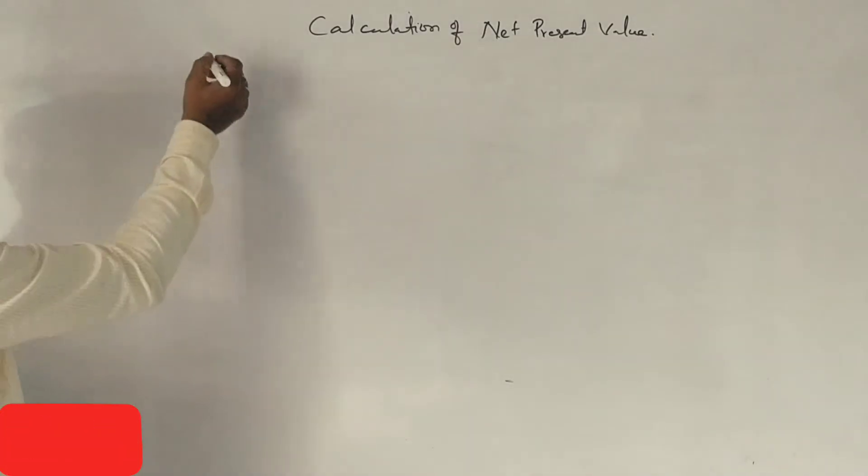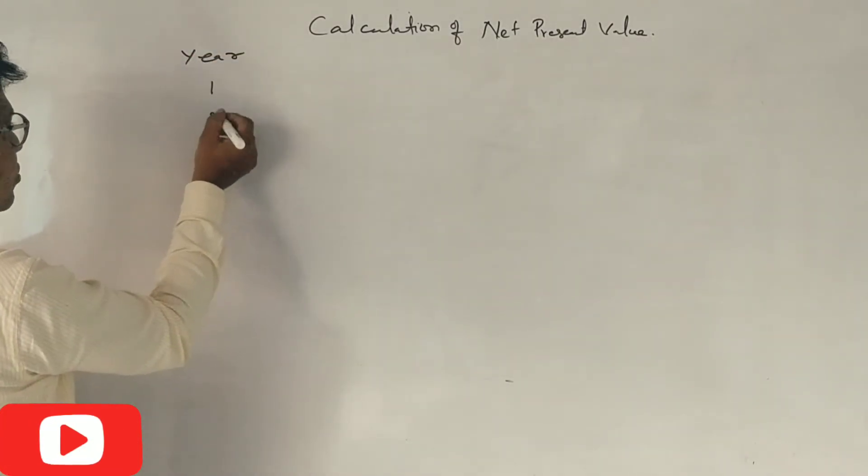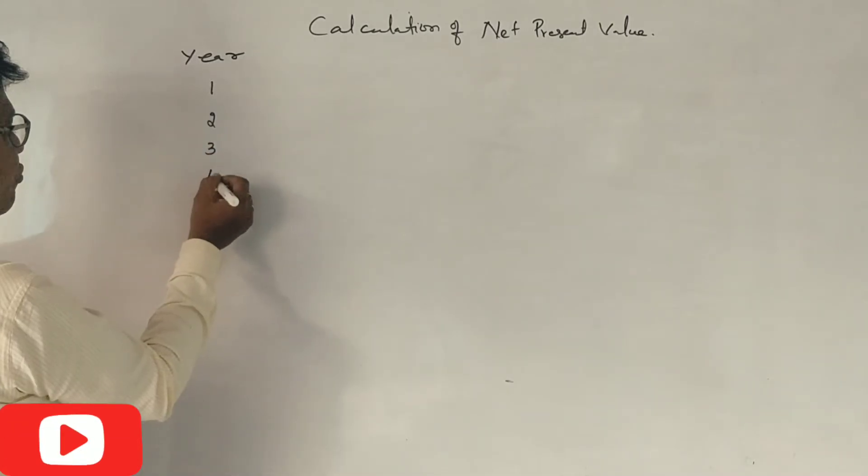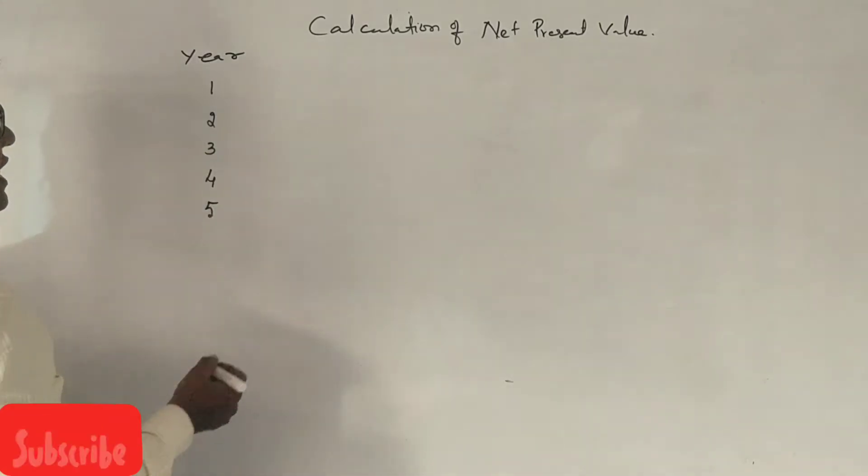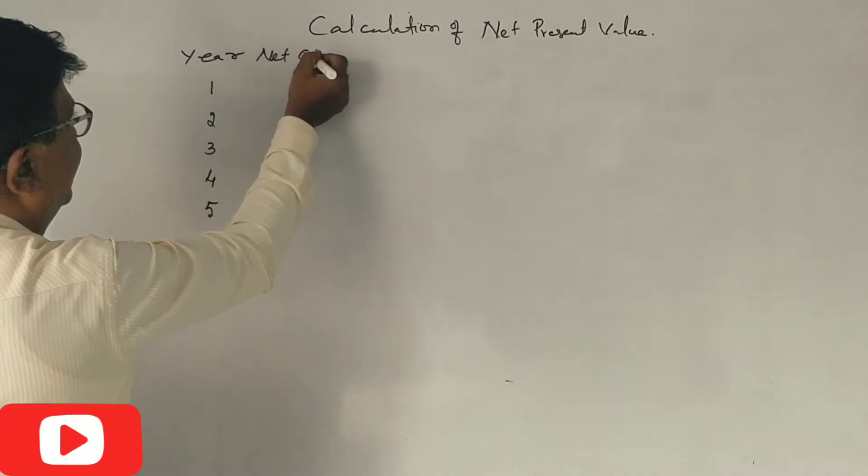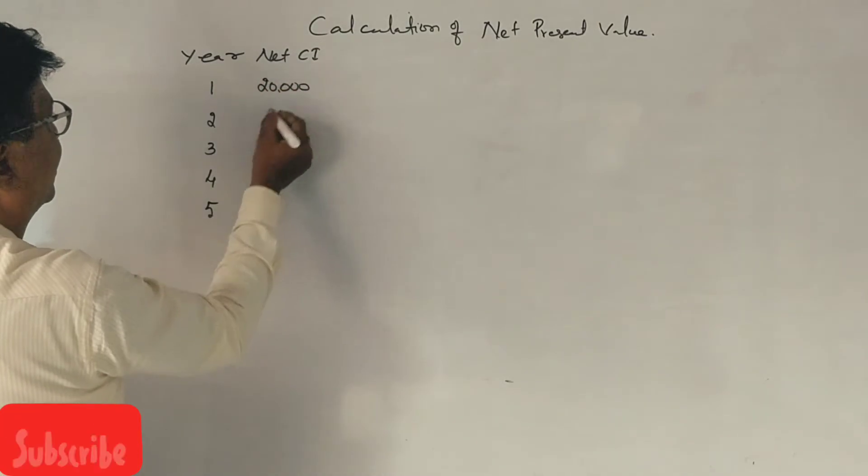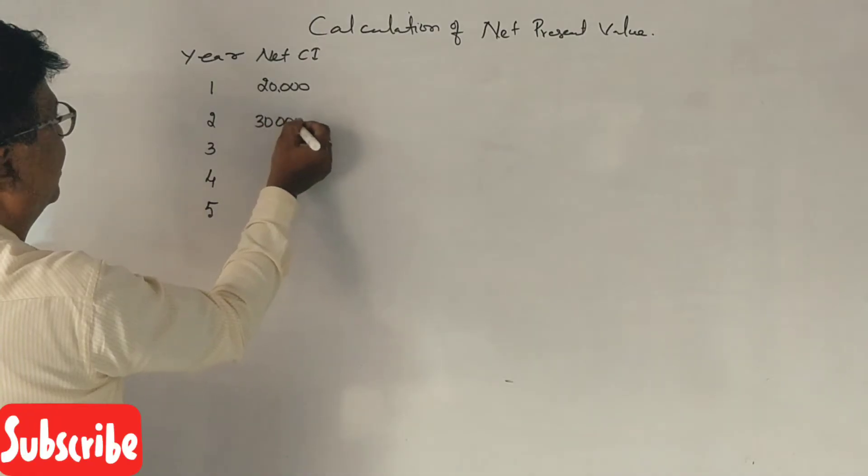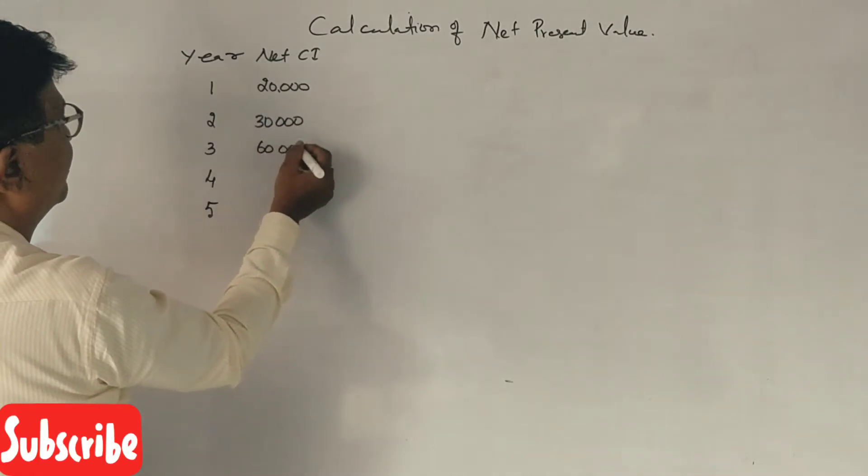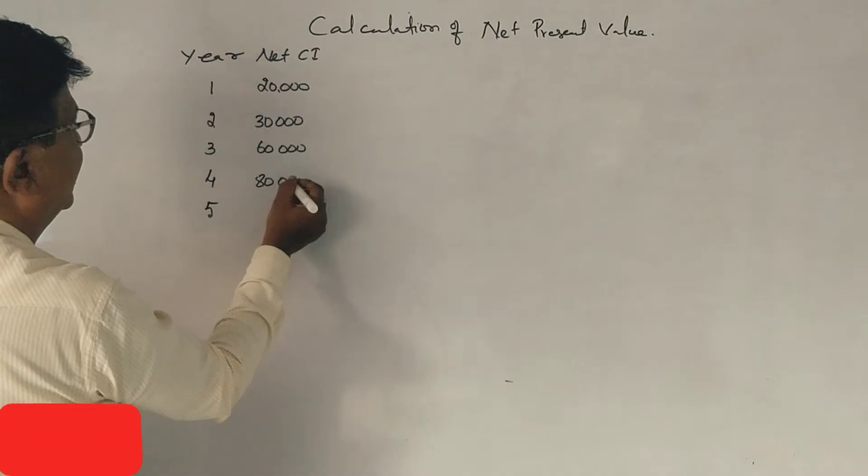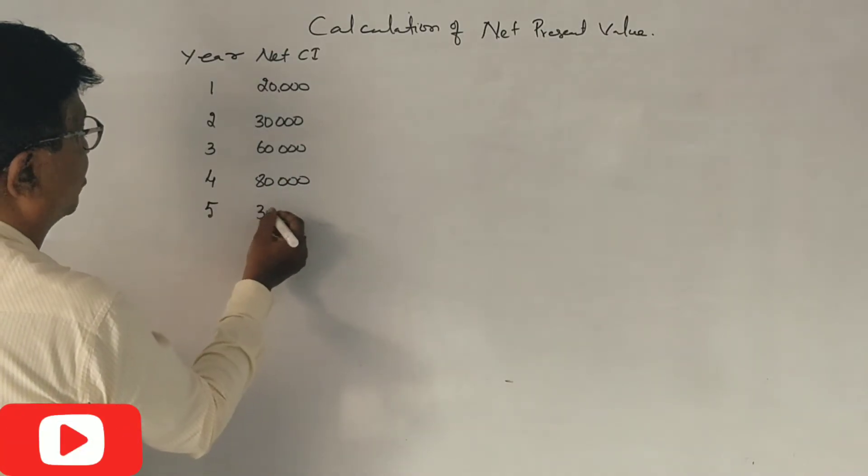So, the first one is years 1, 2, 3, 4, 5. Correct? Net cash inflows: 20,000, 30,000, 60,000, 80,000, 30,000.